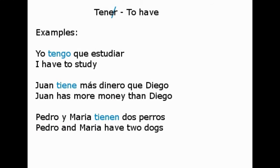Now let's look at some examples. Yo TENGO QUE ESTUDIAR — I have to study. Juan tiene más dinero que Diego — Juan has more money than Diego. Pedro y María tienen dos perros — Pedro and María have two dogs.